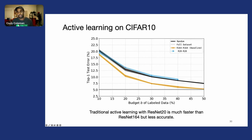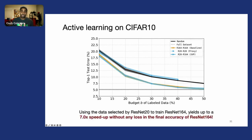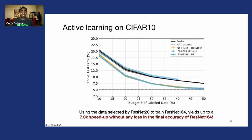What we ultimately want is the best of both worlds. We can achieve that by taking the data selected by ResNet-20 and then training ResNet-164 only at the end, once we've exhausted our labeling budget. This yields a 7x speedup without any loss in the final accuracy of ResNet-164.